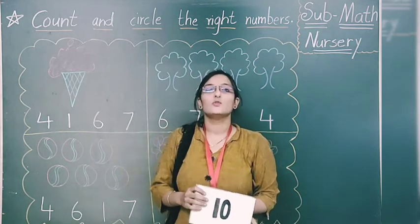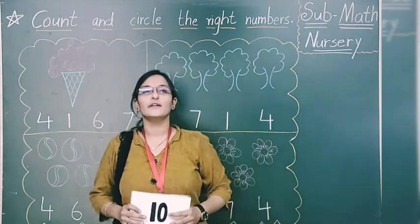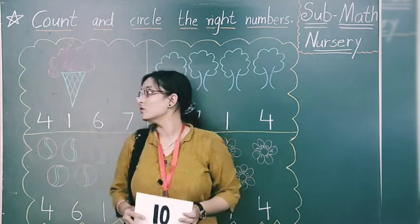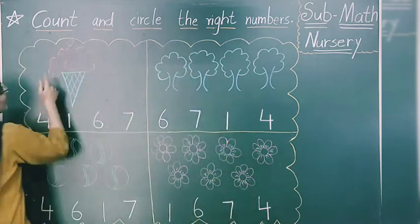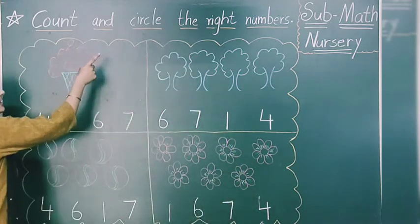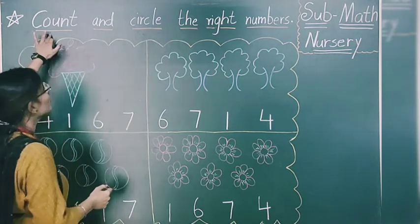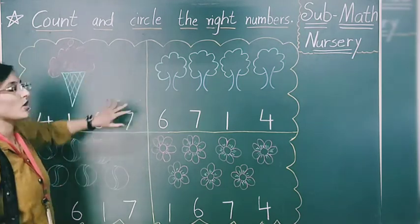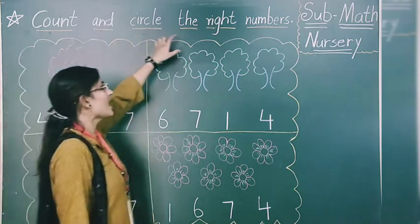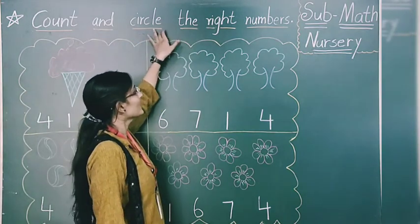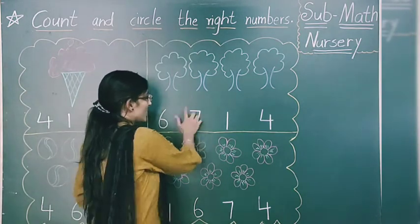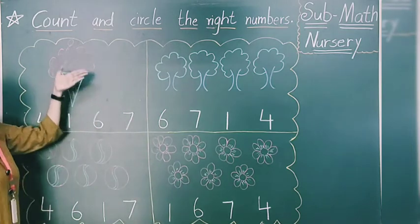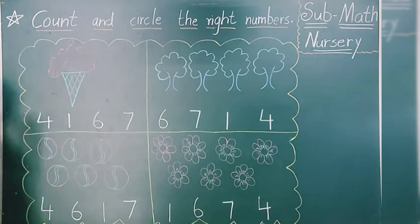Okay students, you have seen numbers 1 to 10 correctly. Now, what you have to do? You have to count and circle the right numbers. You have to first count the drawings on the board and then circle on the right number.